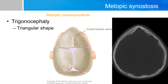The metopic suture is located right here, and it may fuse as early as three months of age and should fuse in nearly all patients by about nine months of age. If this suture is fused prematurely, it will cause the skull to take on a very pointed, almost triangular shape to the front and top of the skull, and eyes that appear too close together. This synostosis causes what we know as trigonocephaly, named for its triangular shape.